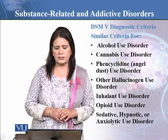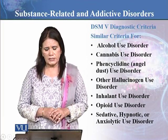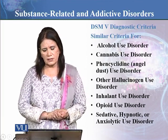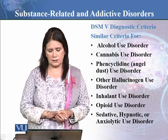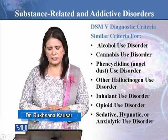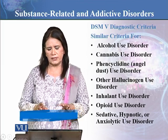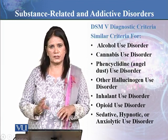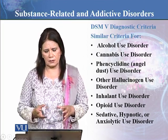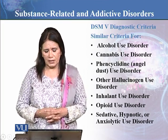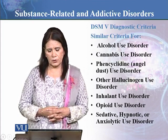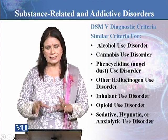DSM-5 diagnostic criteria for substance-related and addictive disorders. There is common criteria for some of the disorders listed here: alcohol use disorder, cannabis use disorder, phencyclidine use disorder — which is also known as a hallucinogen since it generates hallucinations and is more of a pharmaceutical/synthetic drug — other hallucinogen use disorder, inhalant use disorder, opiate use disorder, and sedative, hypnotic, and anxiolytic use disorder. All of these share similar criteria.